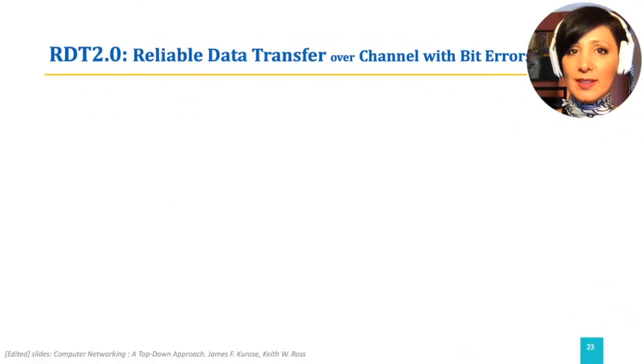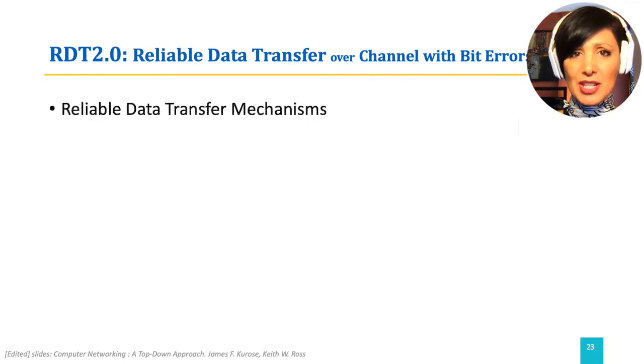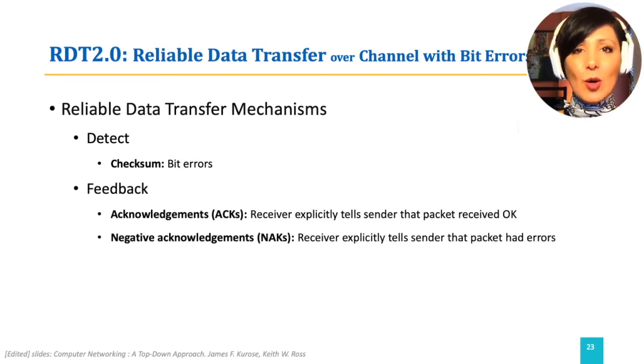In data transfer, a similar approach to what we described in the human phone conversation example could be employed. For detecting error, mechanisms like checksum could be used. For feedback, we can use ACKs or NAKs.